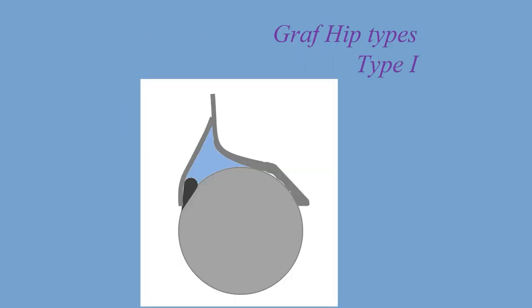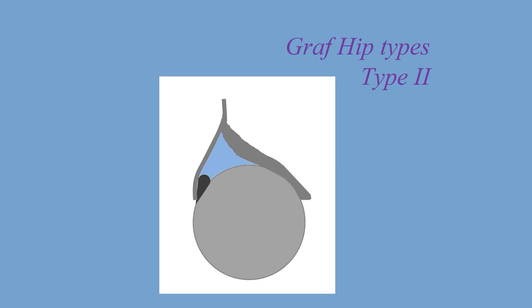Type 1 hip is centered, meaning the femoral head sits nicely in the socket, the turning point is above the labrum, and if we drop a line from the turning point, more than 50% of the head is under the bony roof. Type 2 is exactly like type 1 in that the hip is centered and the labrum is below the bony roof, but here bony coverage is less than 50%.